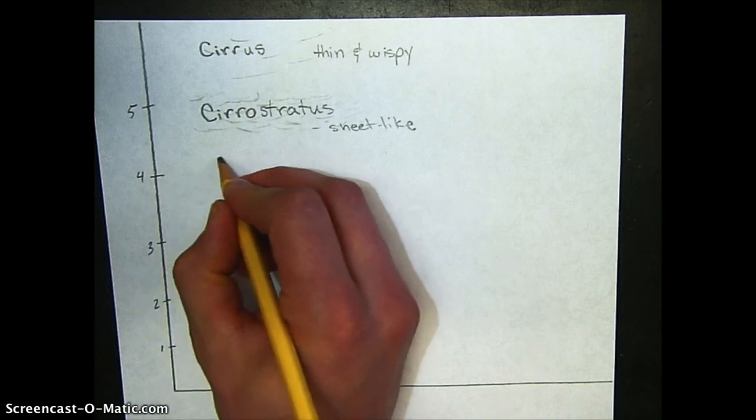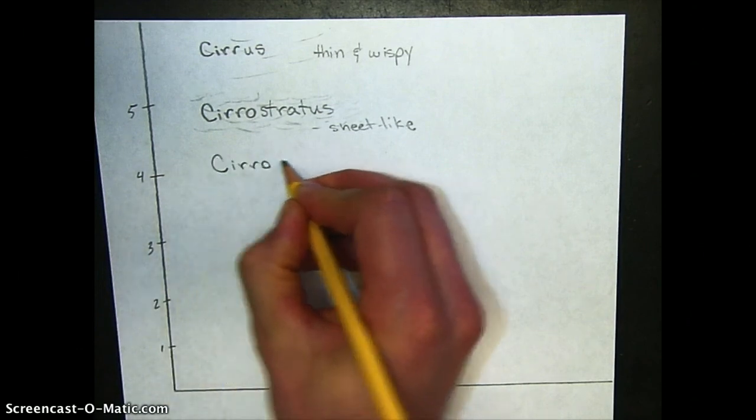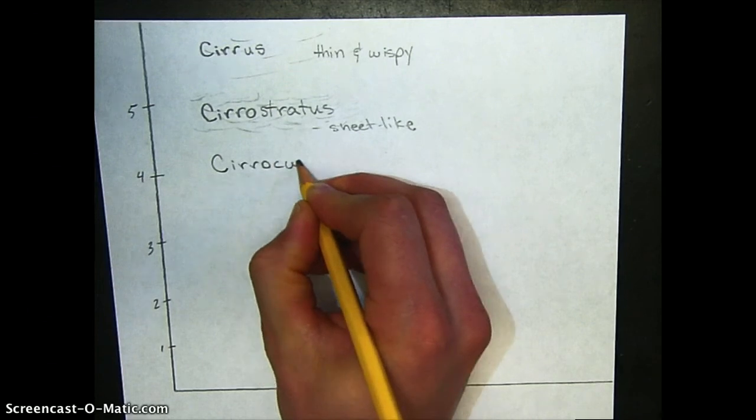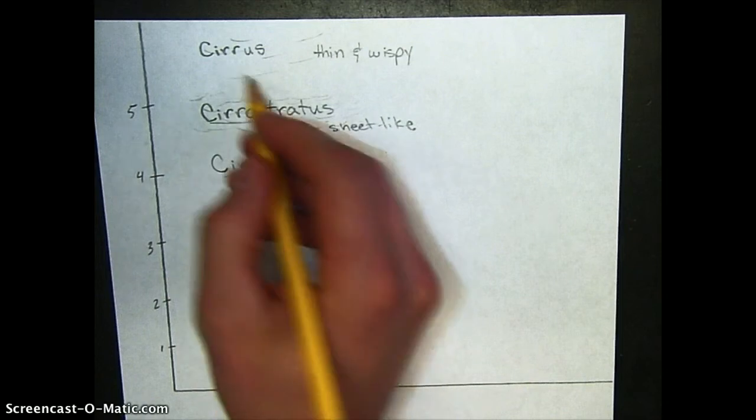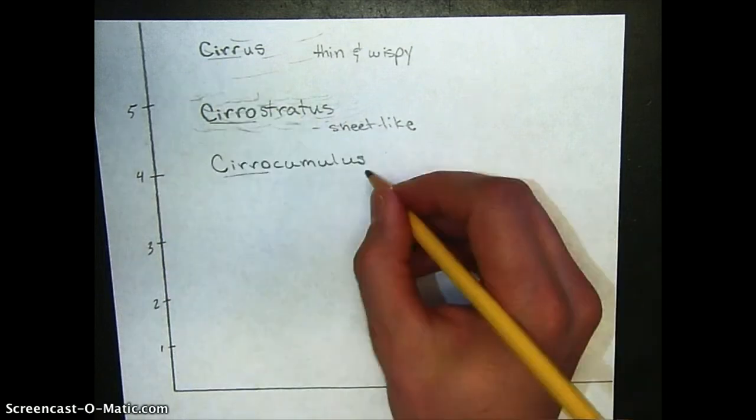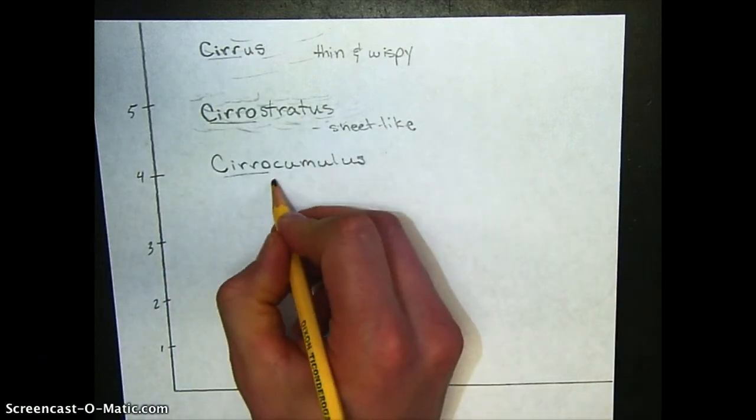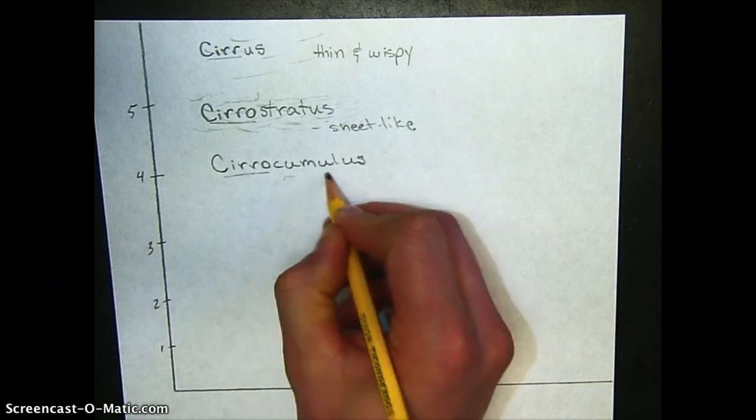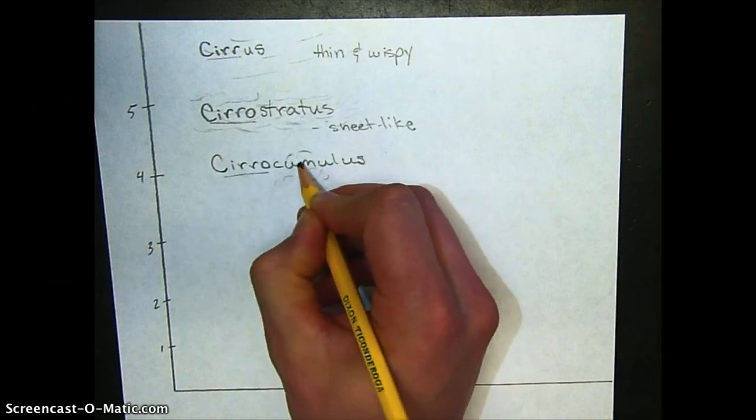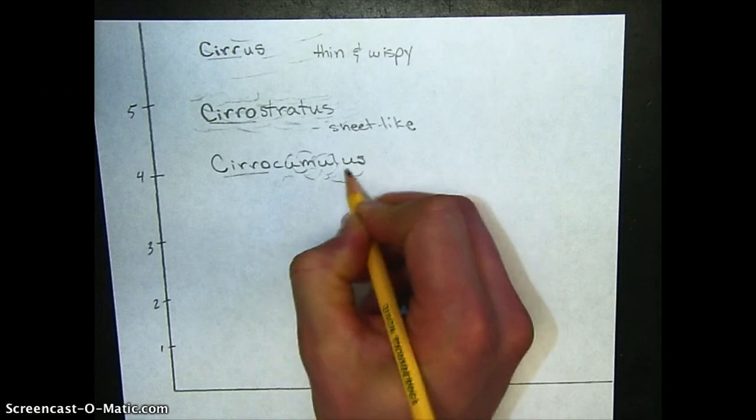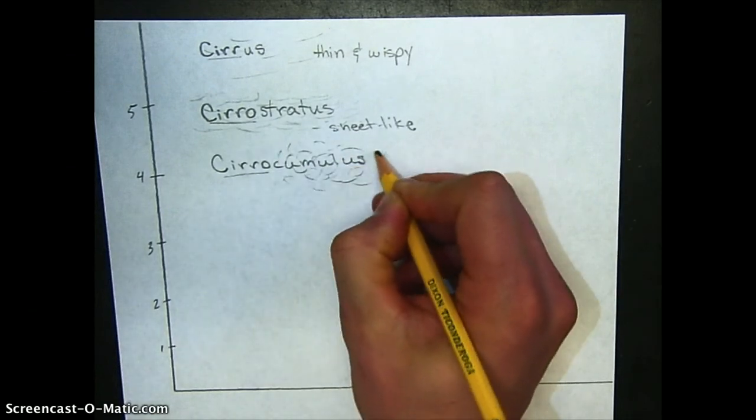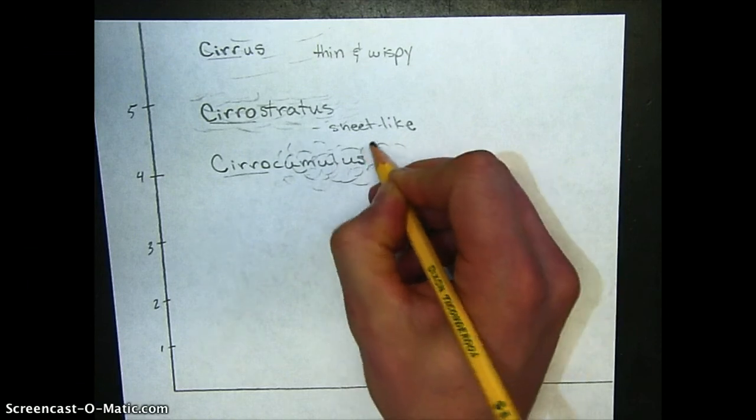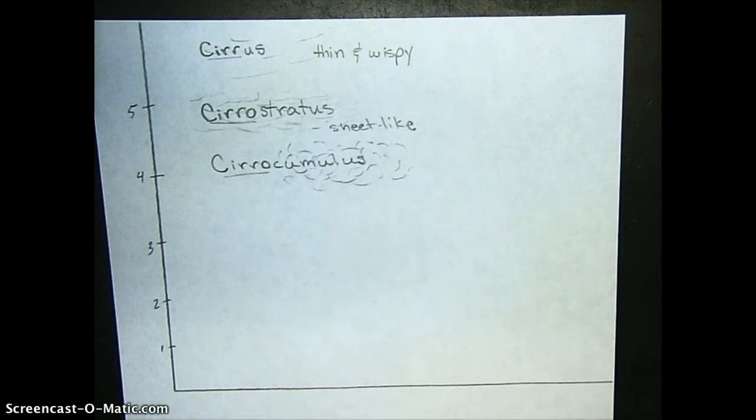And we also have cirrocumulus, and all of these have the prefix cirro or cirrus. Cumulus, those are a lot more puffy, they're very high altitude puffy clouds. These are more like the cotton ball clouds, but they're all very high altitude, four or five miles up.